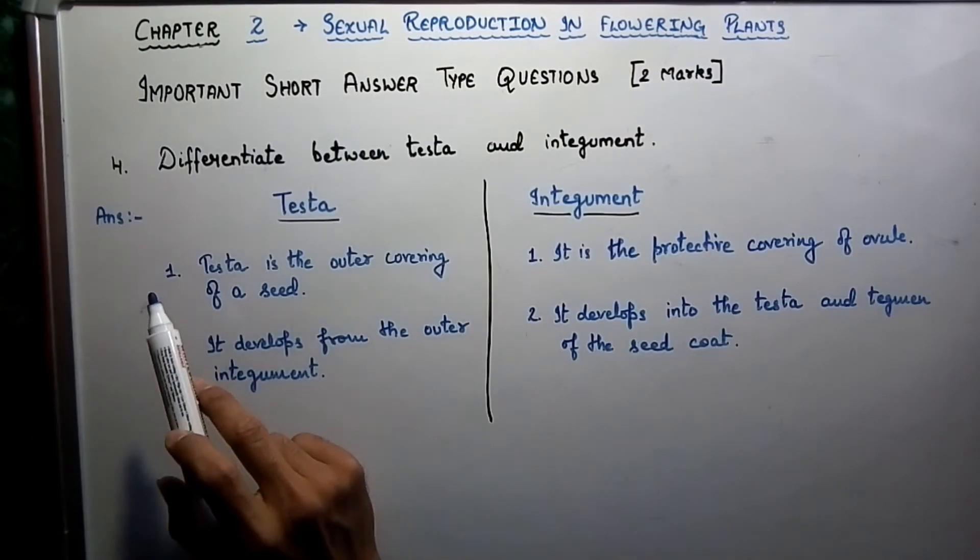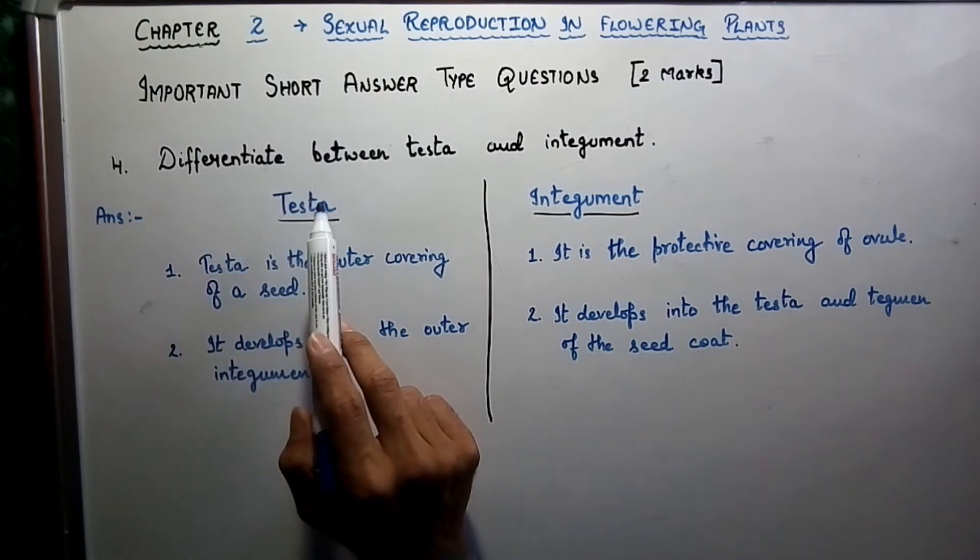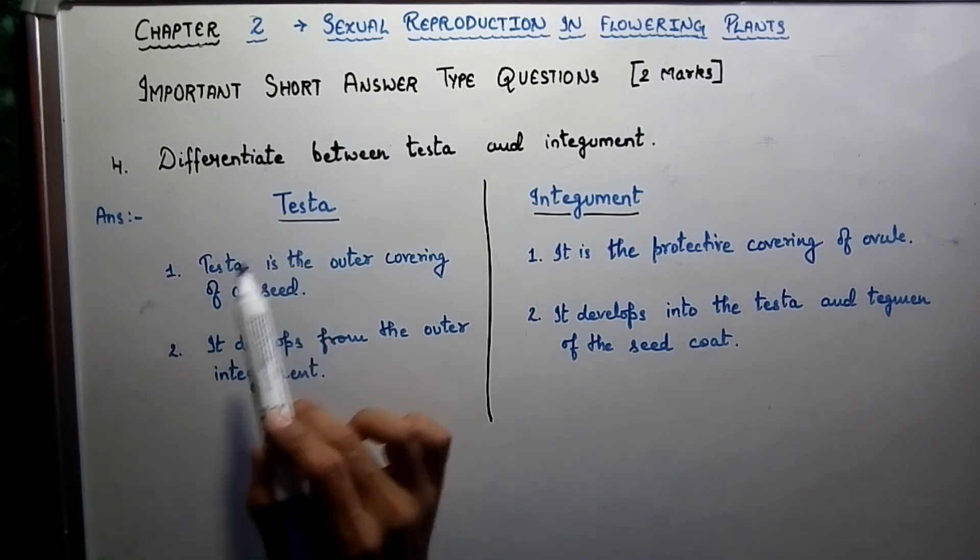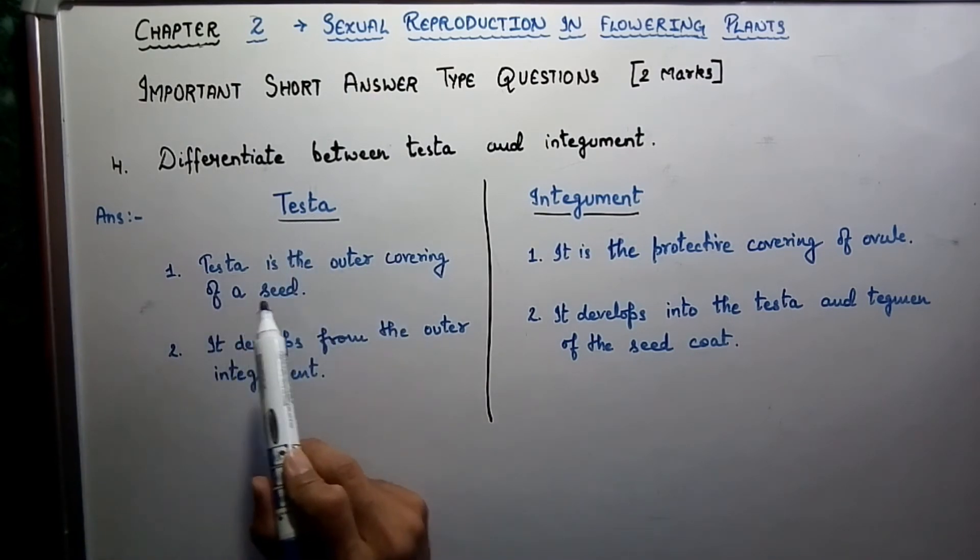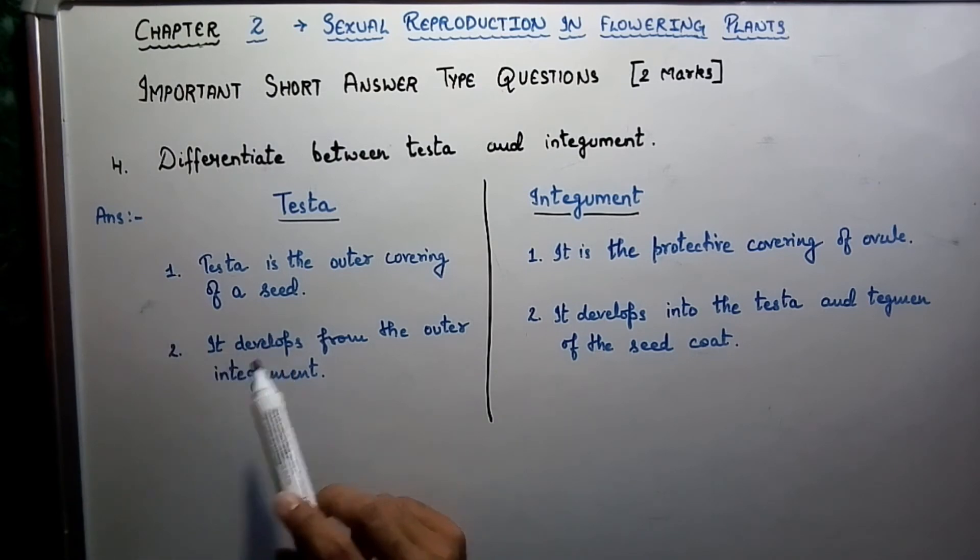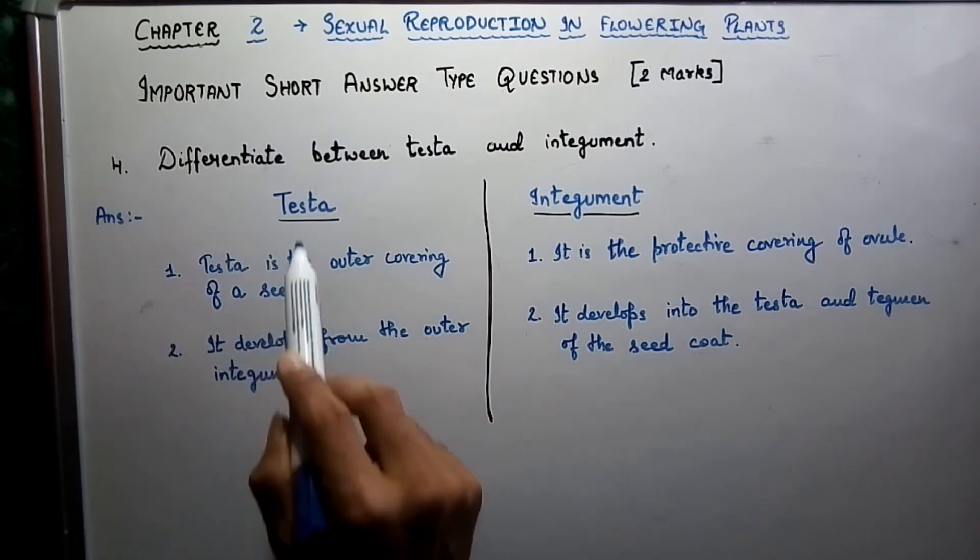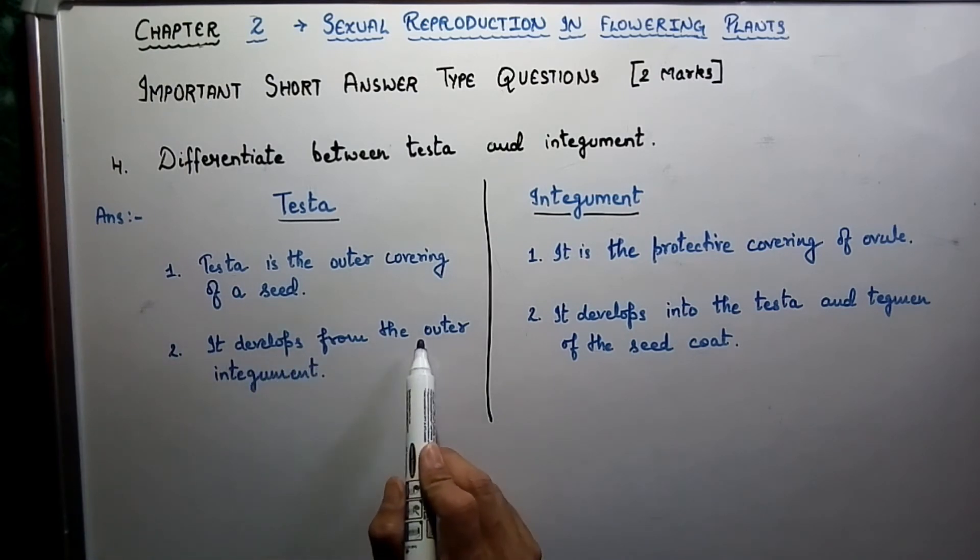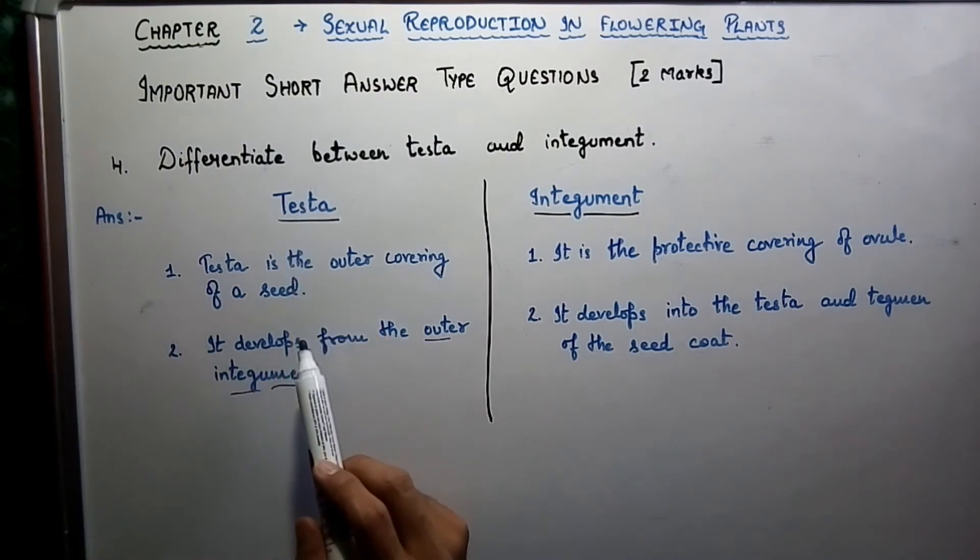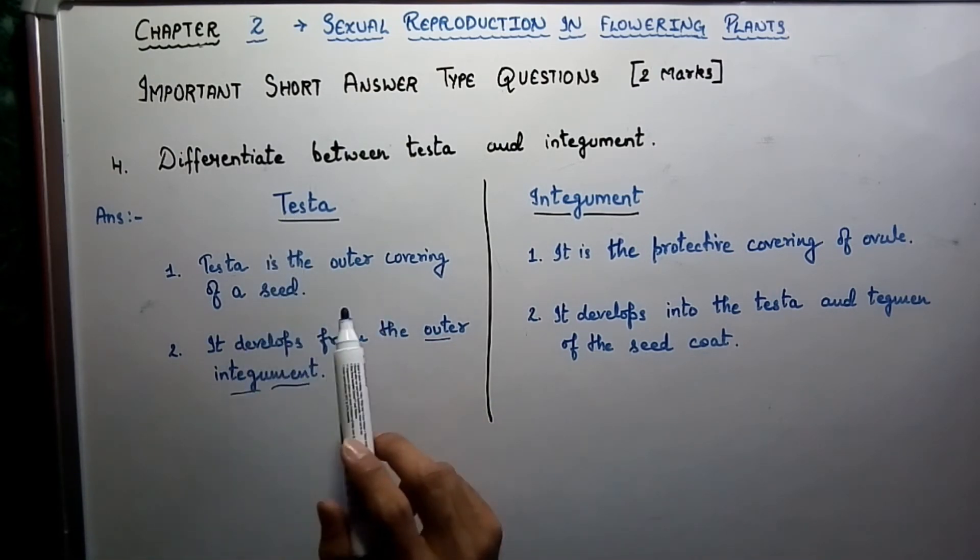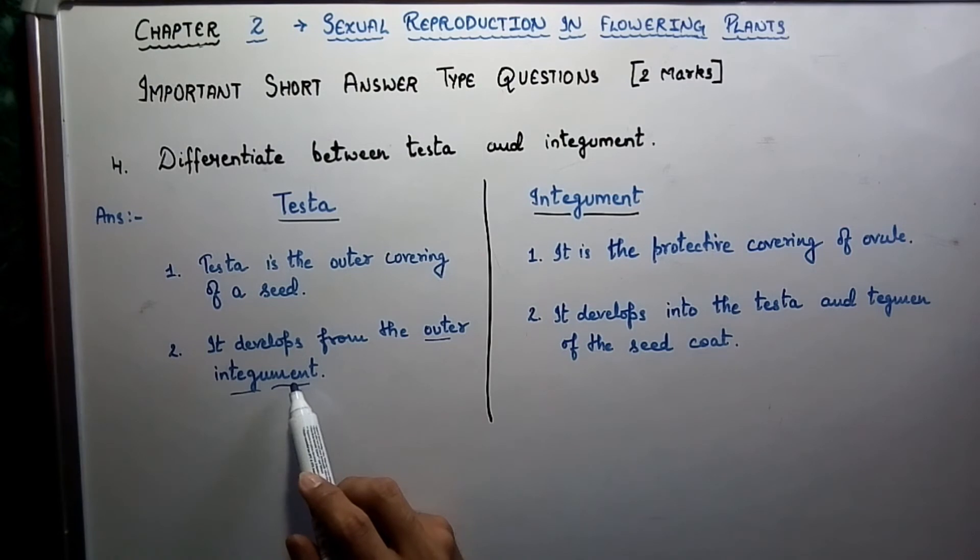Question number four: differentiate between testa and integument. Testa is the outer covering of a seed. The outer layer or covering of the seed is known as testa, and it develops from the outer integument.